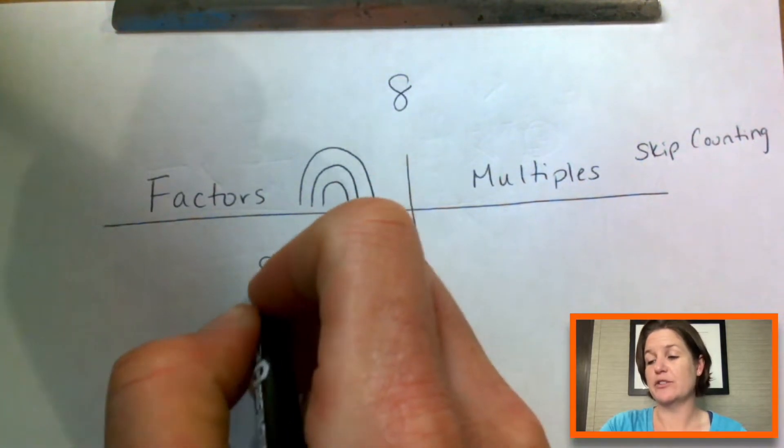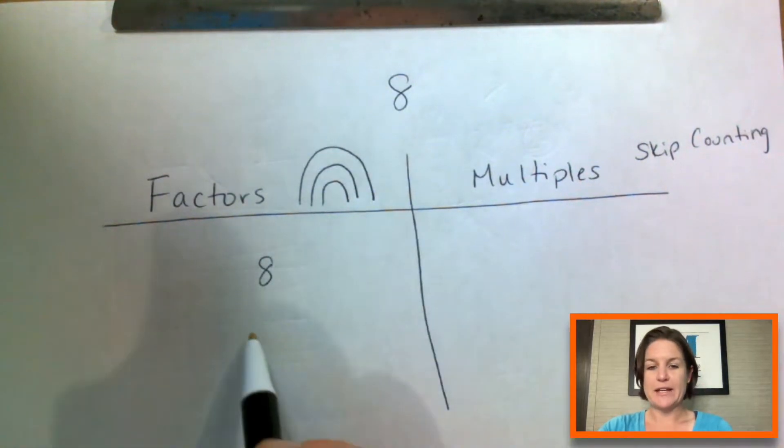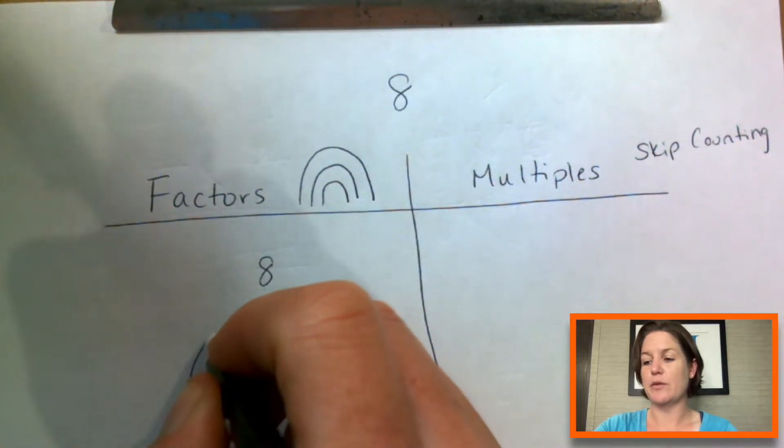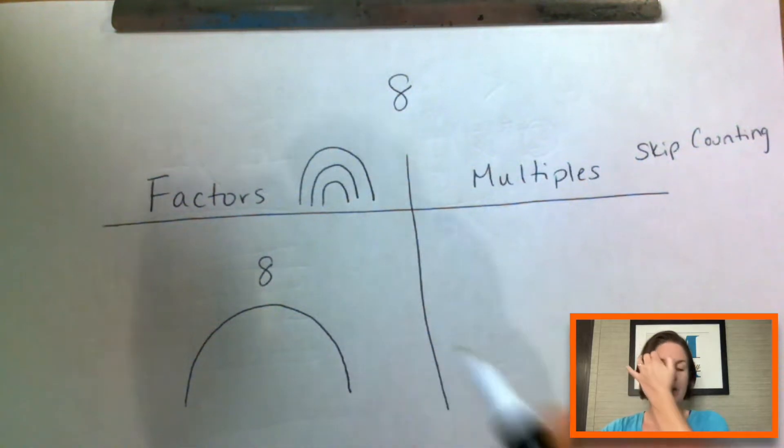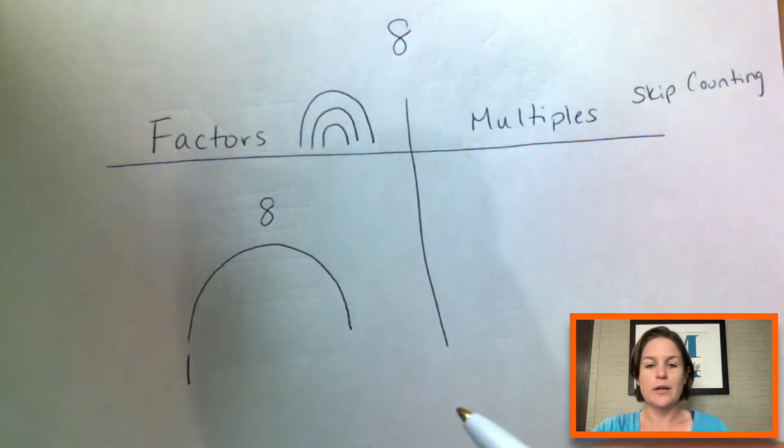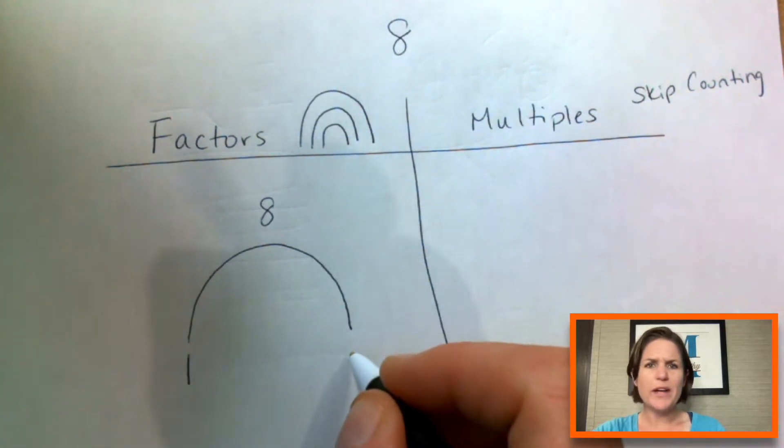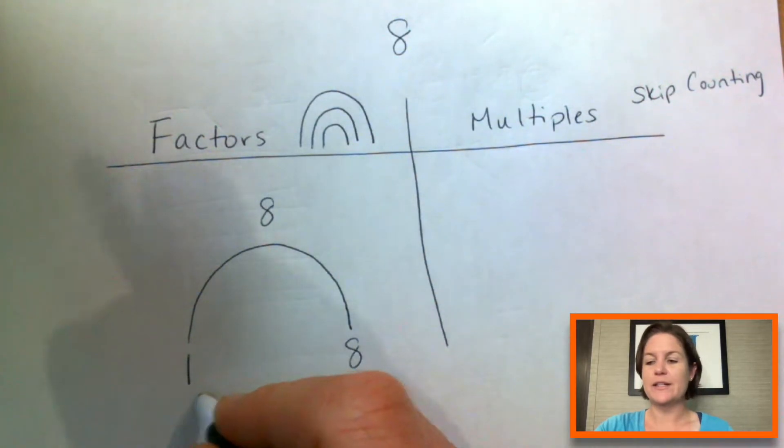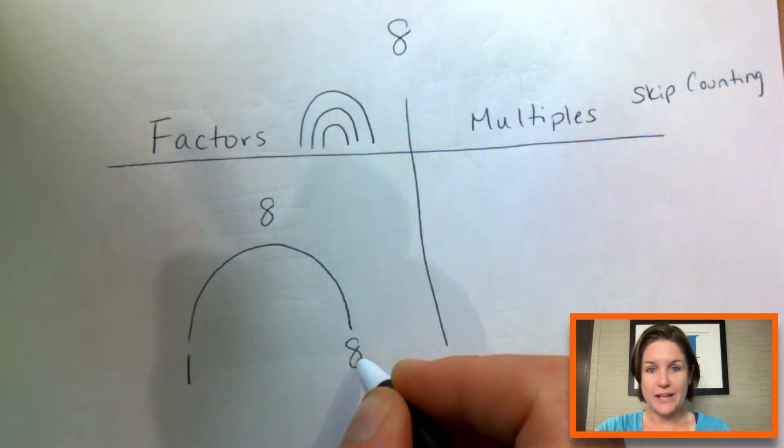So what are the factors of eight? I love factoring. So what we're going to do is put eight on top of our rainbow. Okay. And we're going to start with the number or the factor, the factor one. One times what equals eight? Eight, right? So one times eight equals eight.